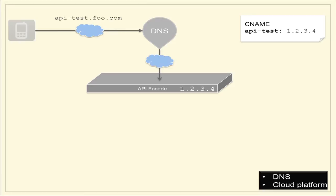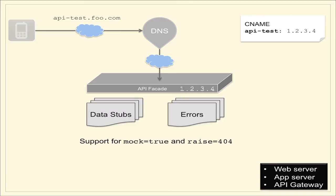Now with this API facade set up — assuming you've got something running on a cloud platform with an IP address, which you give to your DNS provider — the next thing to do is implement data stubs and errors. This ensures you have a solid foundation for test-driven development. Make sure your HTTP codes are in place, your error responses are there, and that you can stub out your data to support mock=true and raise=404 or whatever HTTP code you'd like. You'd only really need a static web server for this static content, or an app server for more dynamic stuff, or alternatively an API gateway, which is more of a Swiss army knife for dealing with HTTP.